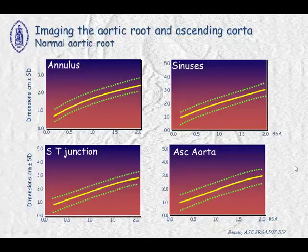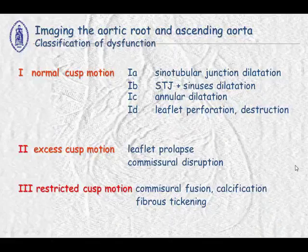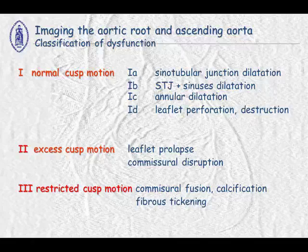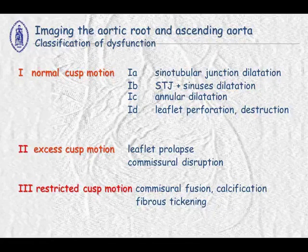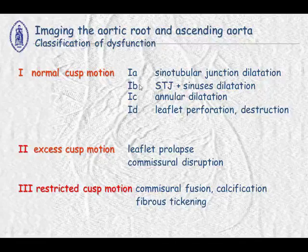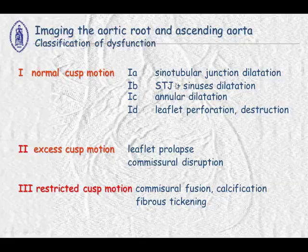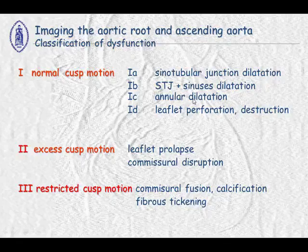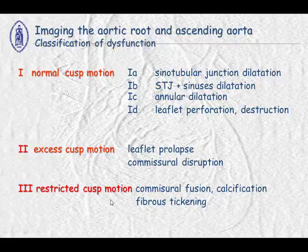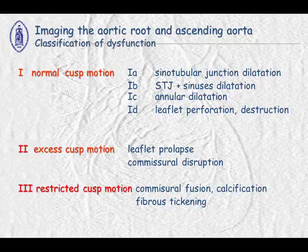I will present a classification of aortic root dysfunction. Like the Carpentier classification for mitral valve dysfunction, we can distinguish three forms. Type 1: normal cusp motion — 1A sinotubular junction dilatation, 1B sinotubular junction plus sinus dilatation, 1C annular dilatation, and 1D leaflet perforation. Type 2 is excess cusp motion due to leaflet prolapse or commissural dysfunction. Type 3 is restricted cusp motion due to commissural fusion, calcification, or fibrous thickening.